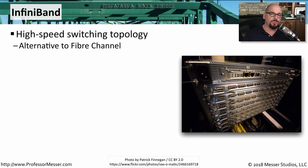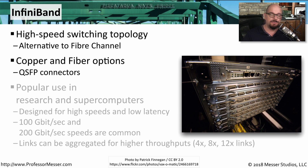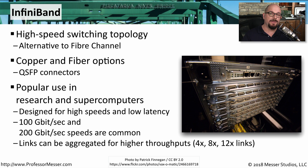If you need very high speeds with your storage area network, you might need InfiniBand. This is a high-speed storage topology very focused on speed, with its own switches and adapter cards, similar to how Fiber Channel is implemented. With InfiniBand, we can connect to the storage area network with both copper and fiber using quad SFP connectors. You would commonly see InfiniBand used in environments that need very high speeds and very low latency, such as research and supercomputer operations. It's common to see 200 gigabit per second speeds with InfiniBand networks, and you can aggregate those together in 4x, 8x, or even 12x links.